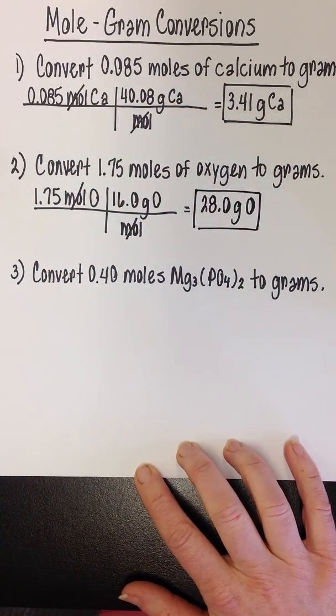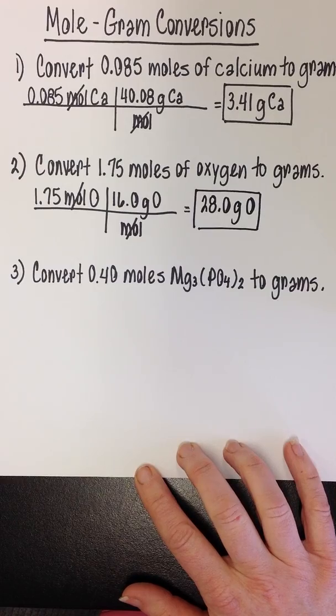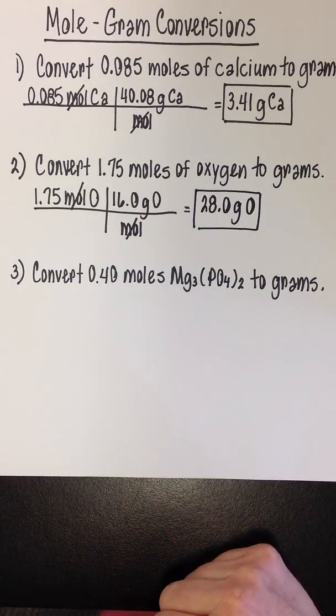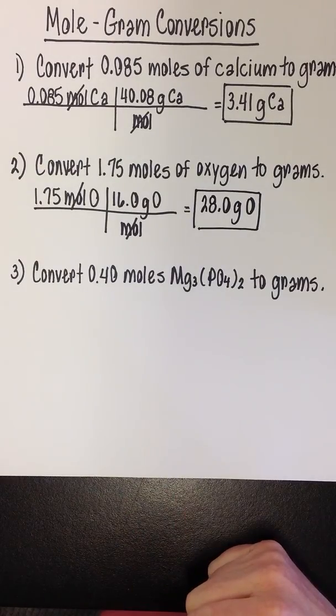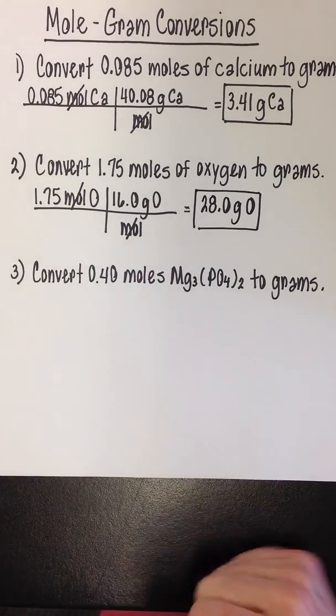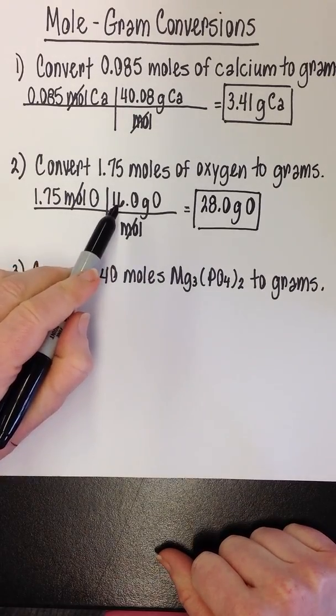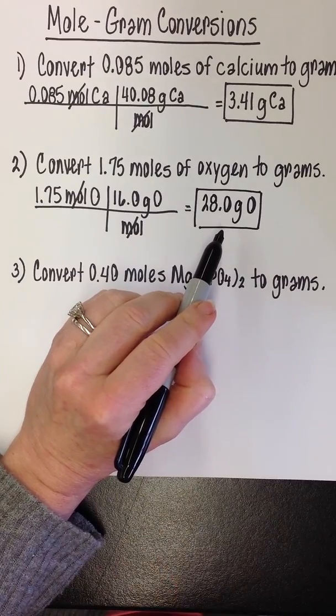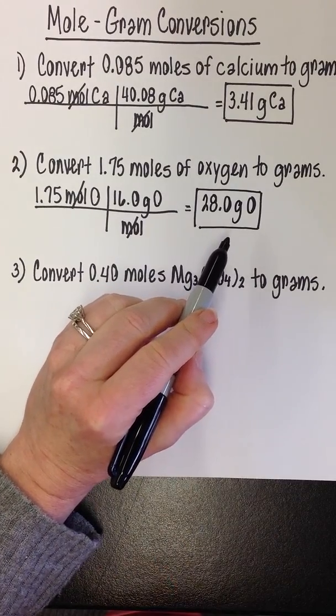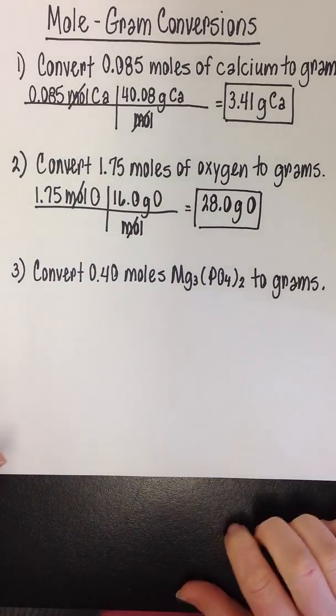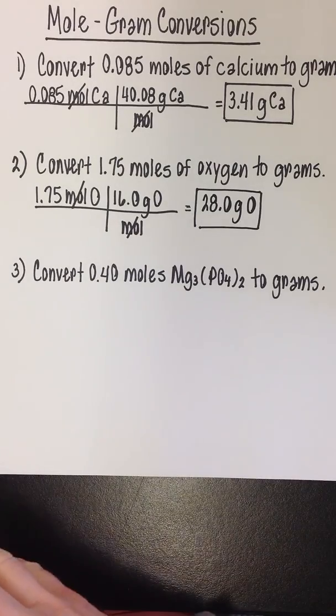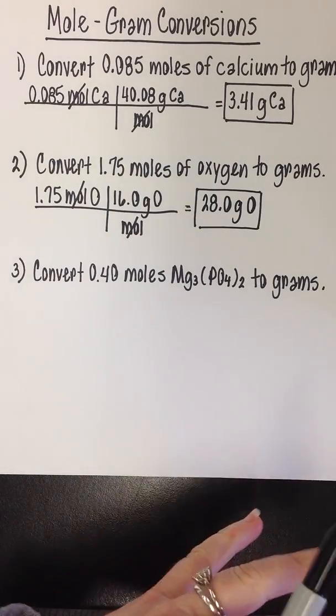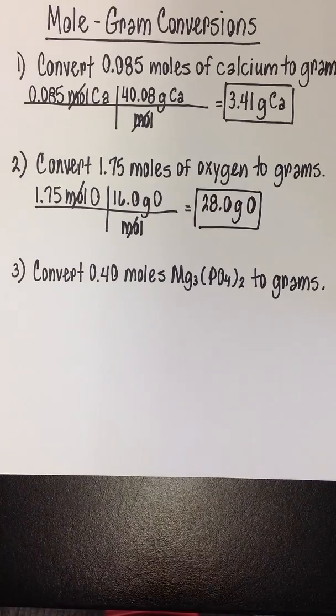Where this comes in handy is if you were doing an experiment and your recipe, your chemical reaction, called for 1.75 moles of oxygen, you would convert those moles to grams. And this is something you can actually measure. That's why it's important to be able to go back and forth to get from the recipe to being able to actually get your hands on a substance.